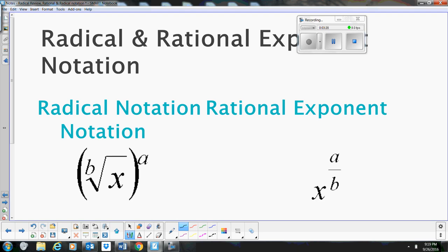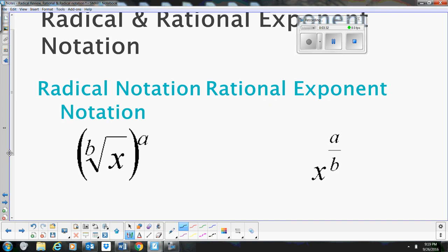First, let's look at radicals and rational exponents. Let's talk about what the difference is. A radical looks like this where you've got a square root symbol or a cube root symbol, and then a rational exponent is when you have a fraction as your exponent.